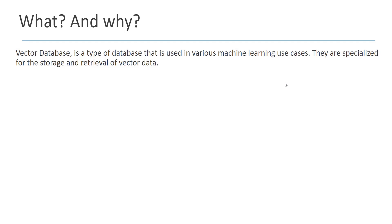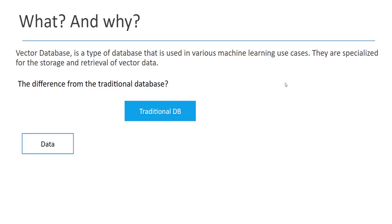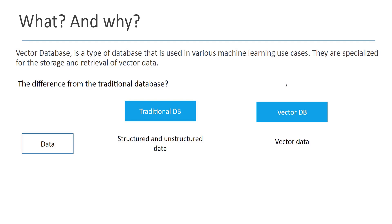Vector databases are a kind of database used continuously in machine learning use cases. They are specialized for storage and retrieval of vector data or embeddings. How are they different from traditional databases? In terms of data, in the traditional database you can store both structured and unstructured data, while in a vector database you have to store vector data.